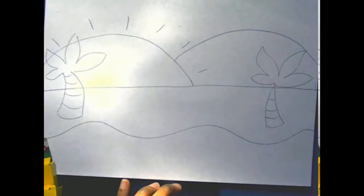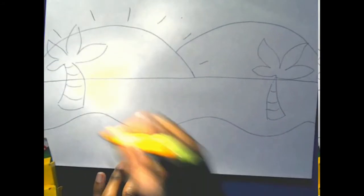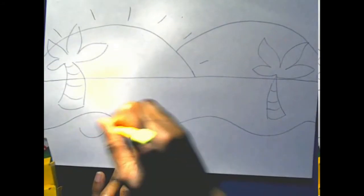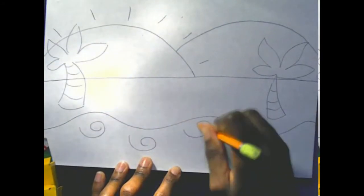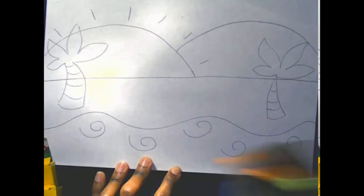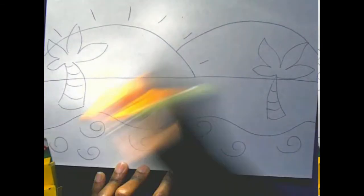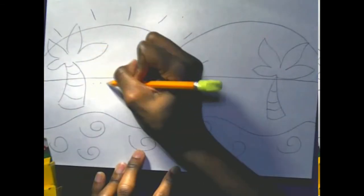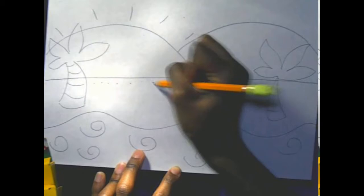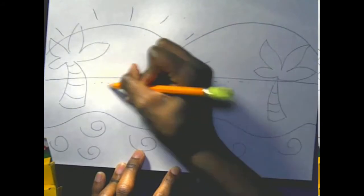Now I have to add some different types of lines. I think I'll do a curly line for my waves. I think I'll do some dotted lines for my beach sand.